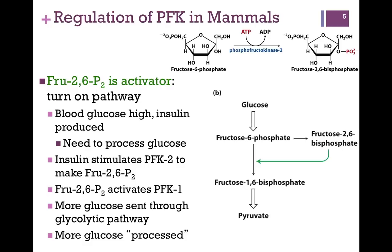So again: as blood glucose increases, insulin is produced, PFK2 is activated, 2,6-bisphosphate is produced, and that activates PFK1 — so we run more glycolysis and process more glucose. You can see why this system would work in a higher organism like a mammal, where you have multiple organs, produce hormones, and different tissue types respond to those hormones. In a single-celled organism like bacteria, they don't produce hormones and don't respond in the same way, so you can see why the regulation would be different in bacteria and mammals.